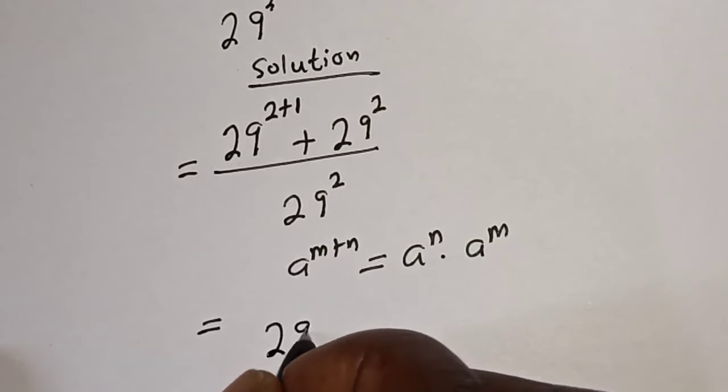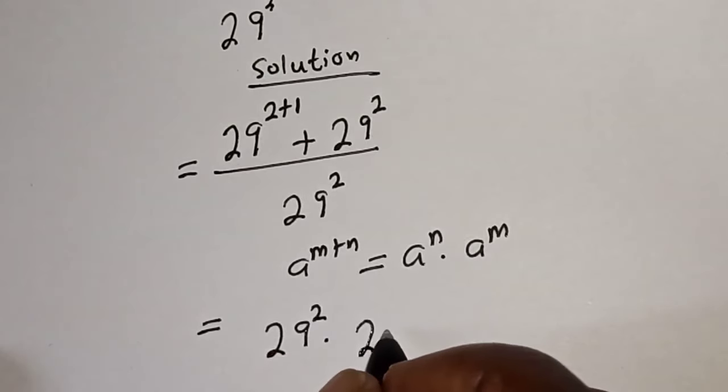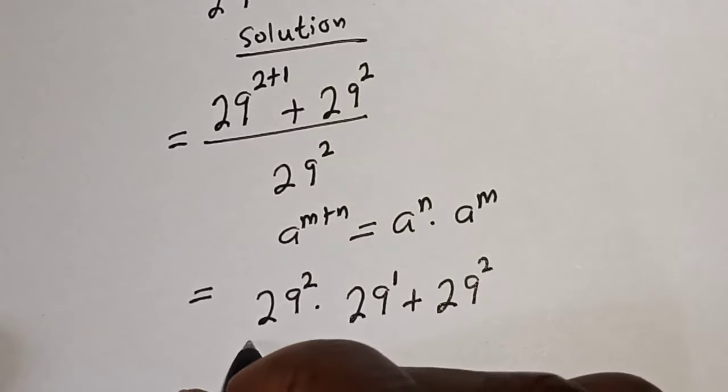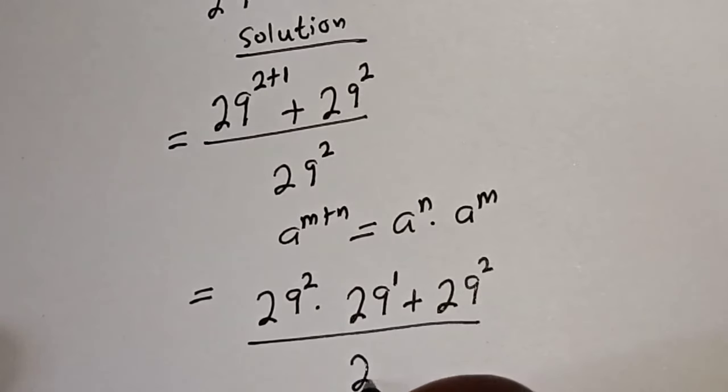29 raised to power 2 multiplied by 29 raised to power 1, plus 29 raised to power 2, over 29 raised to power 2.